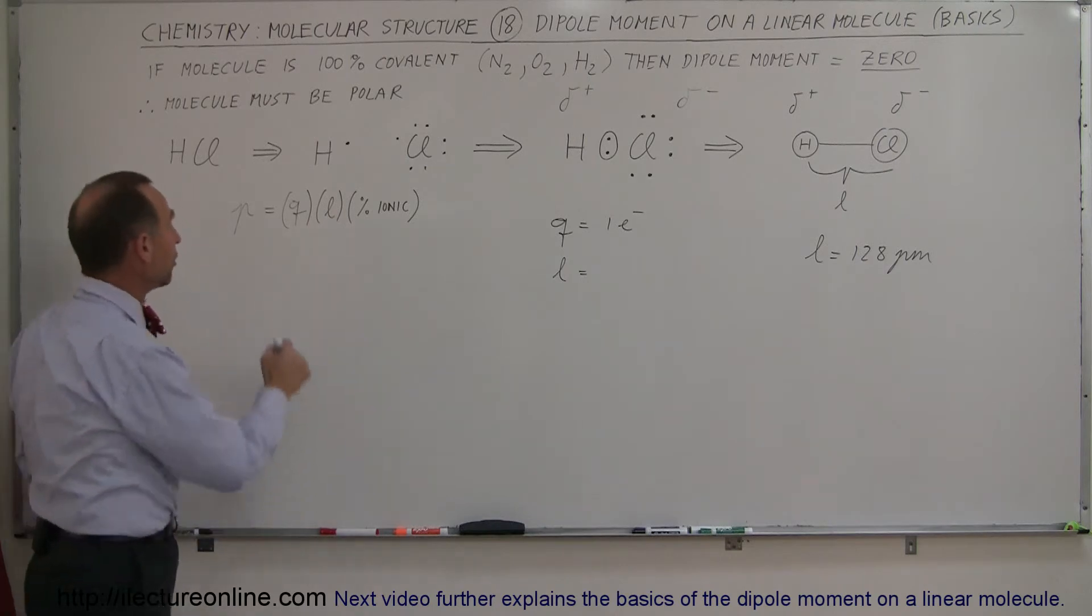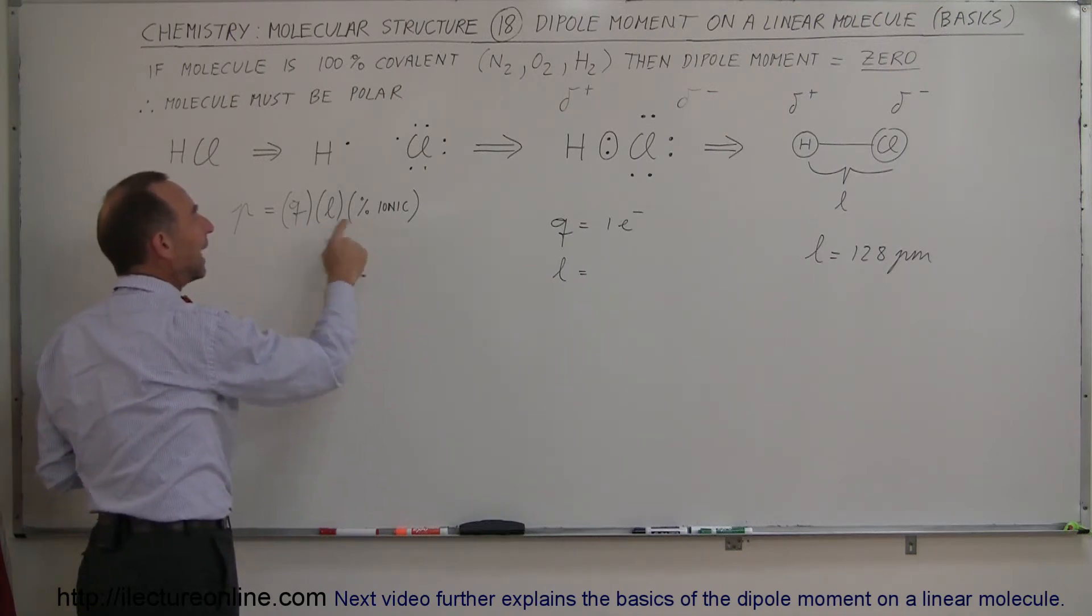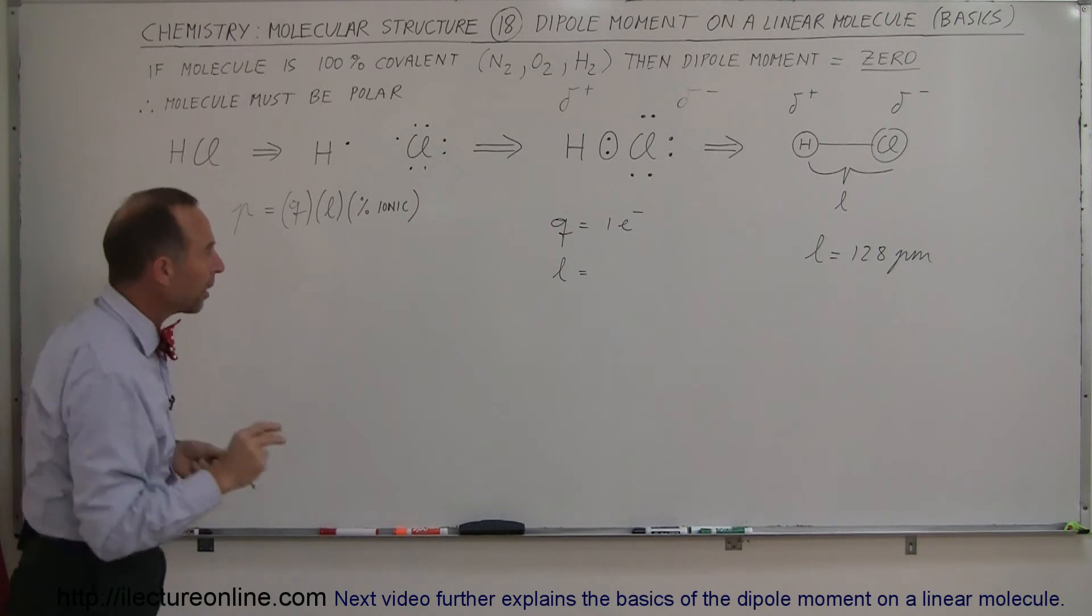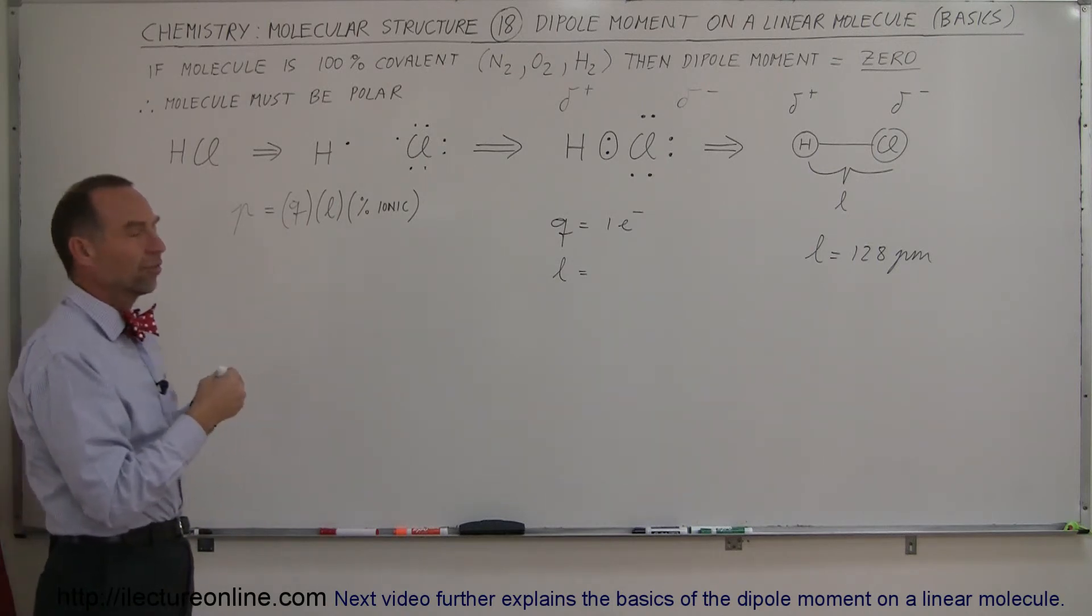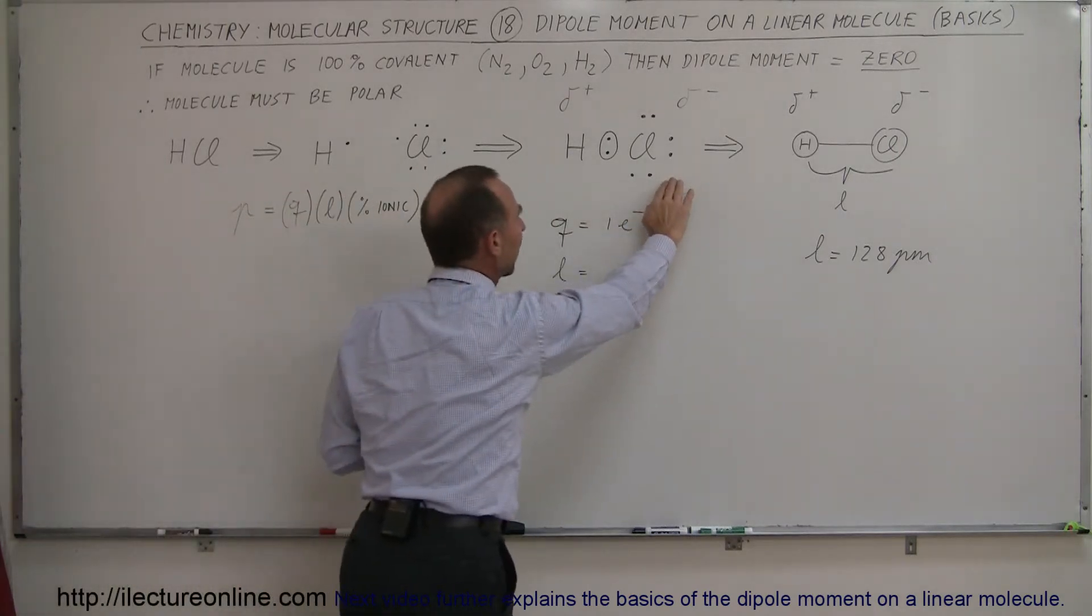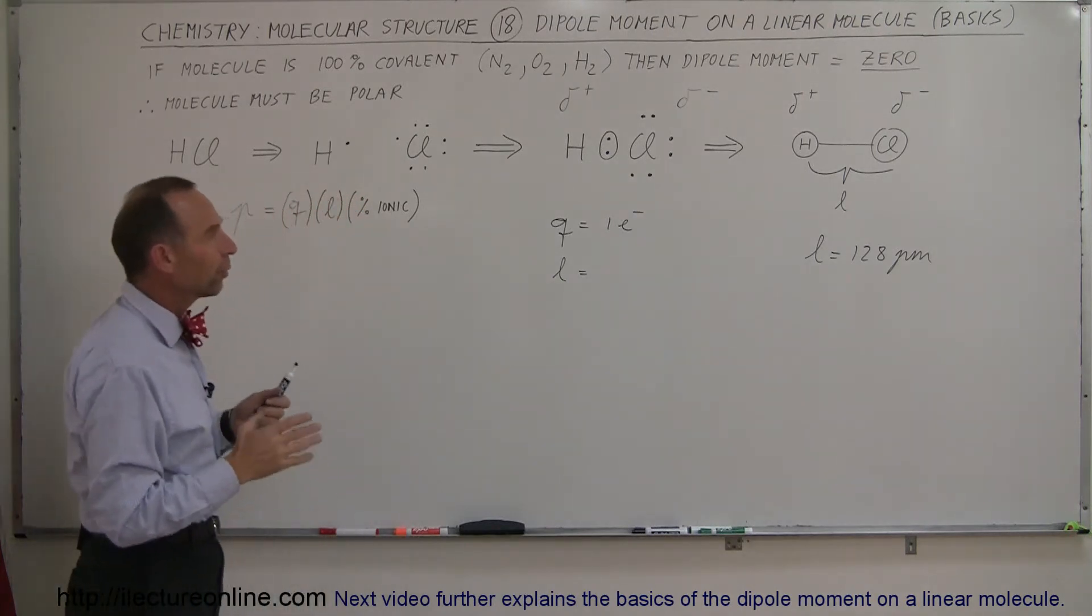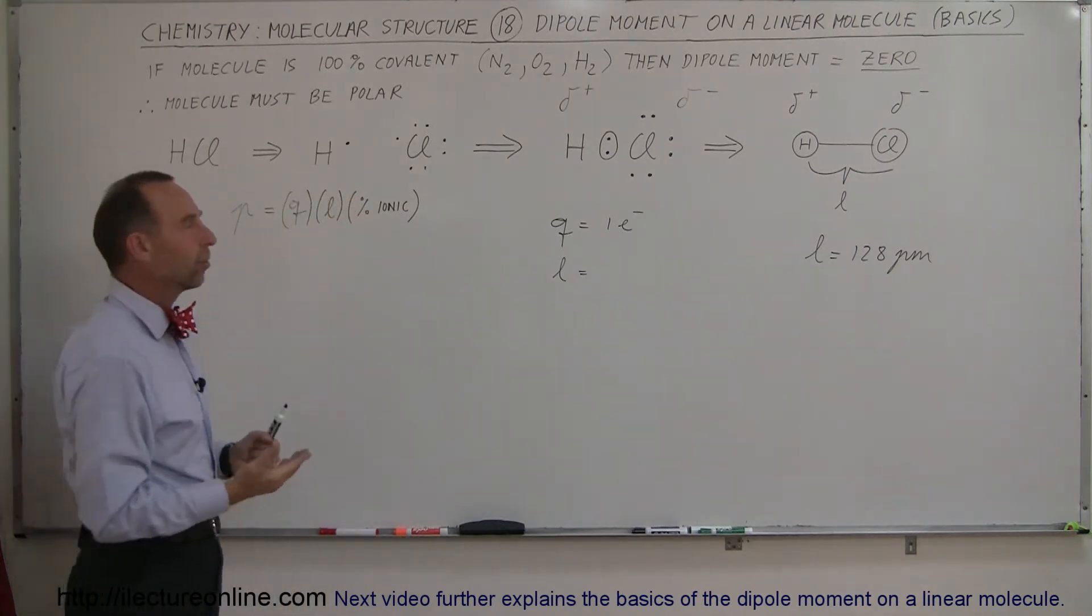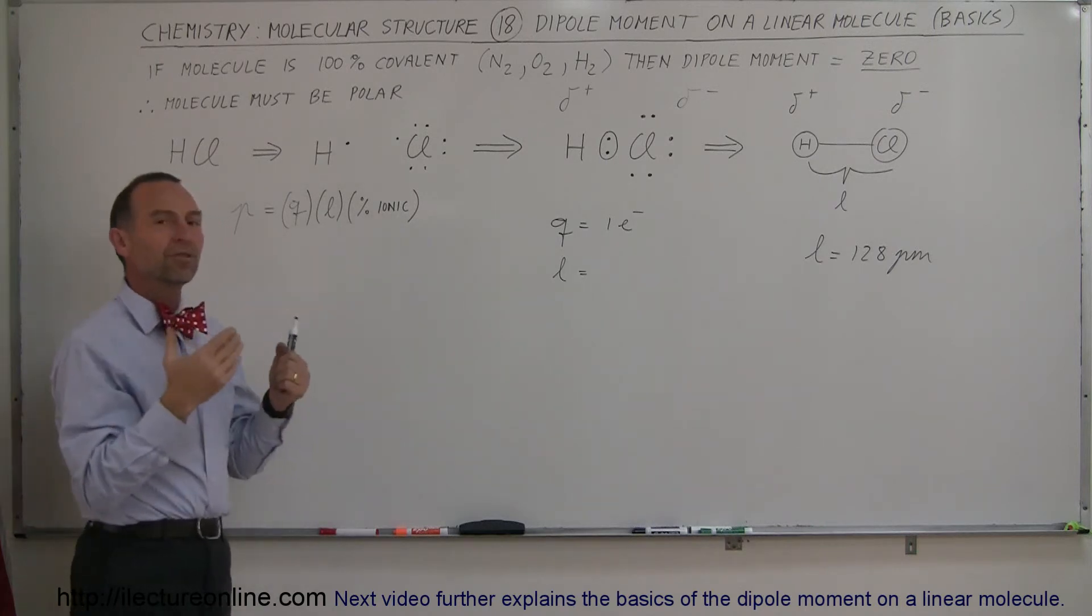Remember, the equation of a dipole moment is equal to the charge that's separated, the length or distance between the two charges, and then what we have to take into account with a molecule is that it's not 100% ionic. It's not like there's a separation of one complete electron. One electron didn't go to the chlorine atom and stay there 100% of the time. There's some sharing taking place, and so it's not 100% ionic. It's only partially ionic, and we need to figure out what that partial percentage is.